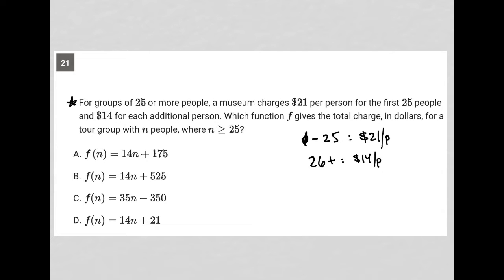Which function f gives the total charge in dollars for a tour group with n people where n is greater than or equal to 25? Well, if n were equal to 25, it would just be 21 times n. But as soon as n gets larger than 25, that's going to change. So I think the best way to answer this question is through a strategy called plug in your own number.